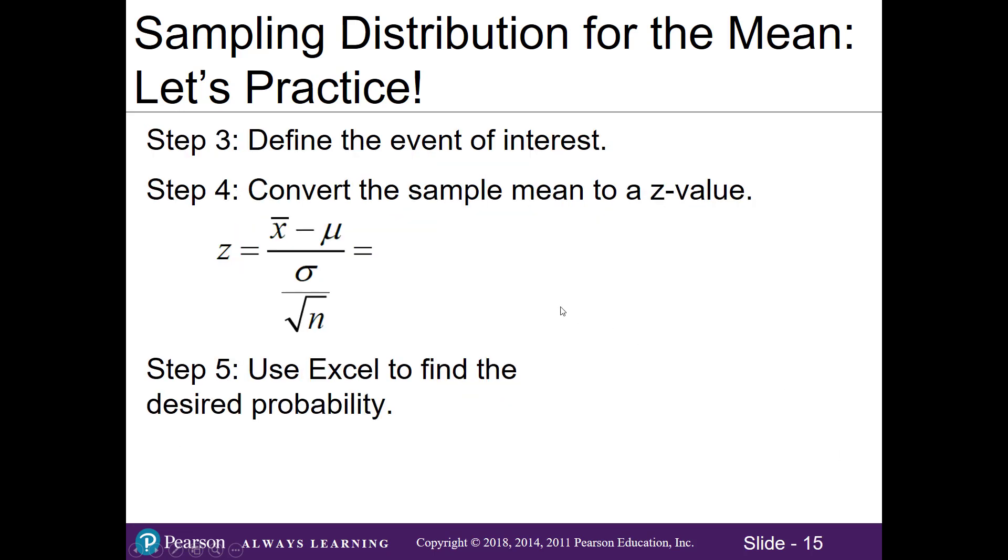Now in step three, we want to define the event of interest. Recall it said we want to know the probability that the sample mean exceeds 2,100. Exceed is just another way of saying greater than. So we'll write our event of interest as P(x̄ > 2,100). Now in step four, we'll plug in everything into our formula to find the z value of our sample mean. Our sample mean is the 2,100 and our population mean is the 2,000. And then the standard error that we found previously was the 81.32. Recall that this top part, that's our sampling error, the difference between our sample mean and our population mean. I'll subtract these two and I get my 100 over my standard error of 81.32. When I plug that into my calculator, I get a z value of 1.23.